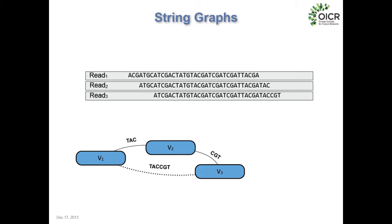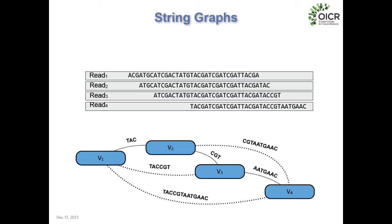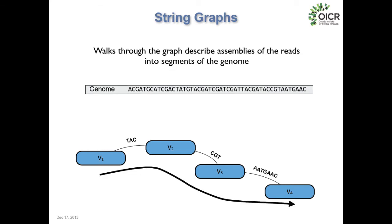We can extend this to more and more collections of reads. Adding a third read gives a third vertex and two more edges. Adding a fourth read, which overlaps all previous reads, adds more edges — all labeled by overhanging stretches of sequence. The fundamental property of assembly is that walks through these assembly graphs give us reconstructions of the genome. If we find a walk from v1 to v2 to v3 to v4 and collect the sequences along the labeled edges, we reconstruct the genome sequence. Assembly boils down to building these large graphs and finding walks through them.